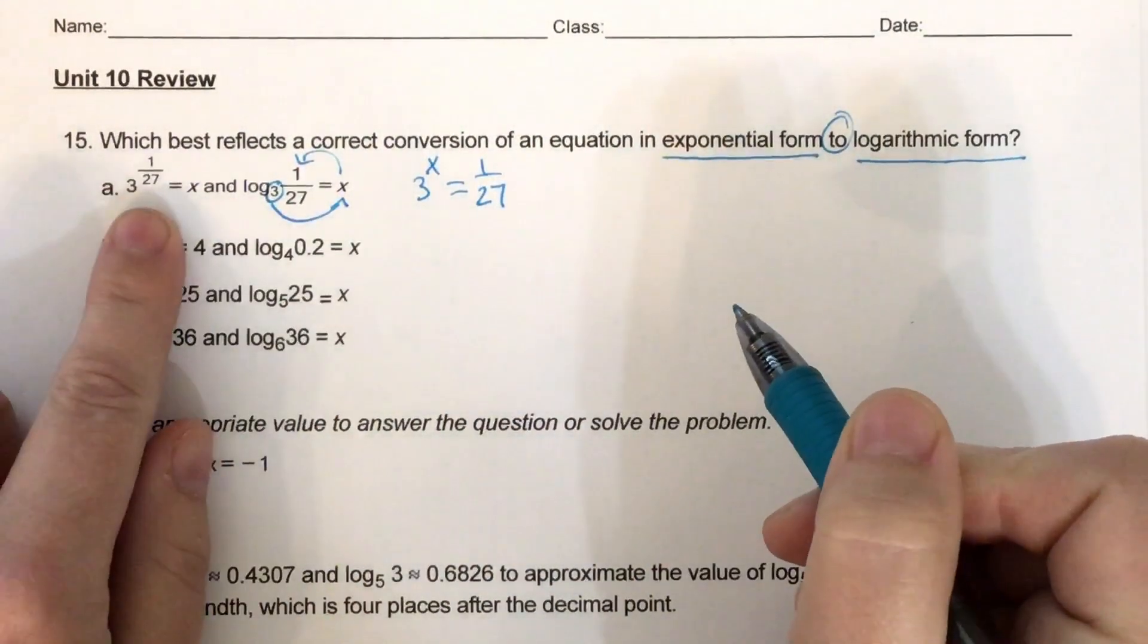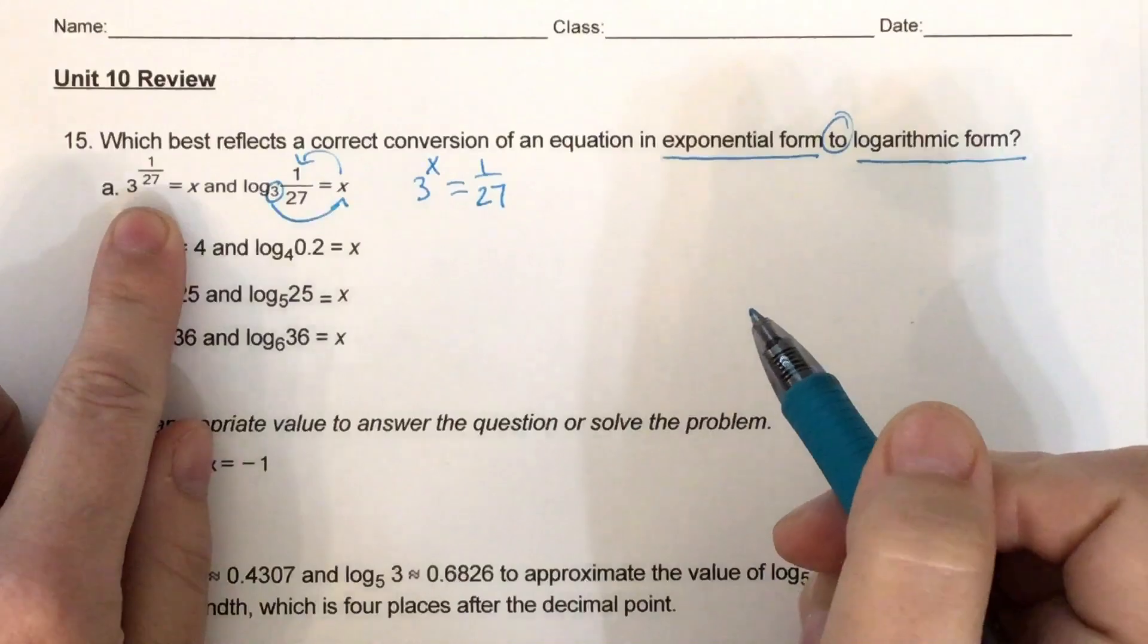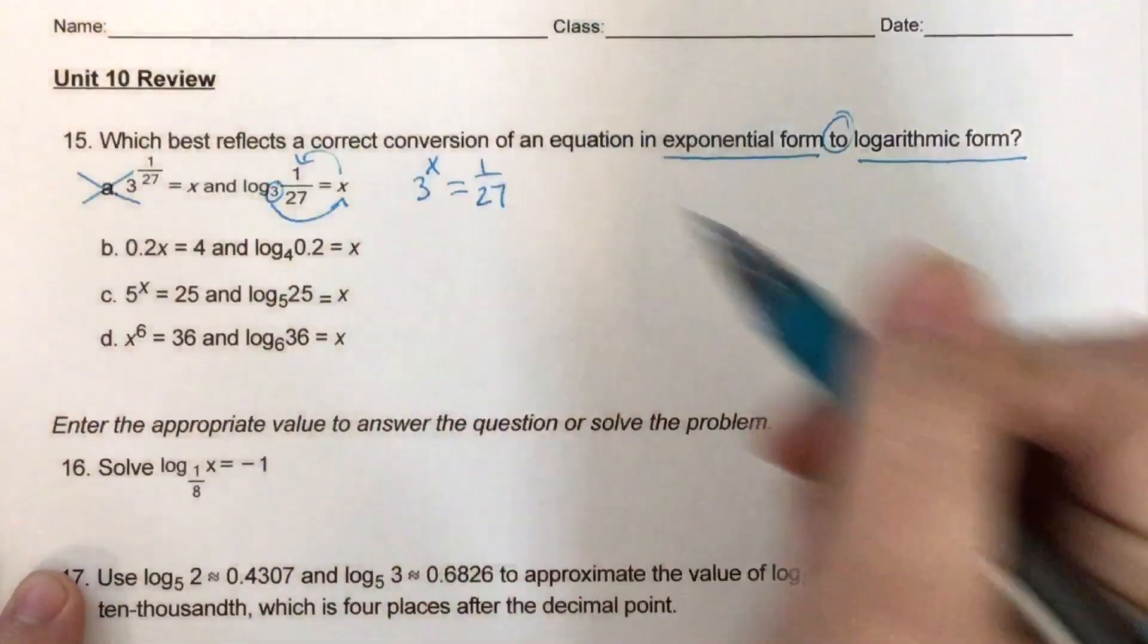So 3 raised to the x equals 1 over 27, and then I look to see if that's what this said, and it didn't. So, A is not the answer.